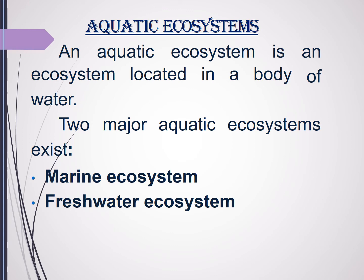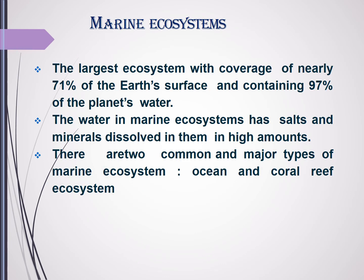Next we will move on to the second category of ecosystem, which is aquatic. This refers to the water bodies. Basically there are two major aquatic ecosystems: marine ecosystem and freshwater ecosystem. The marine ecosystem is the largest ecosystem, covering nearly 71% of the earth's surface and containing 97% of the whole planet's water.